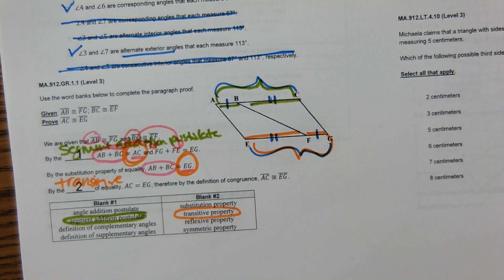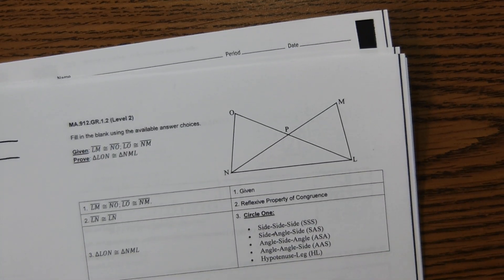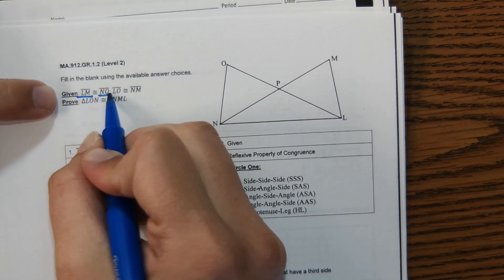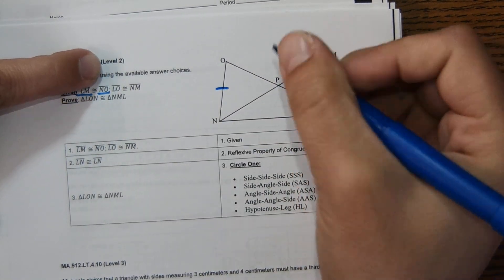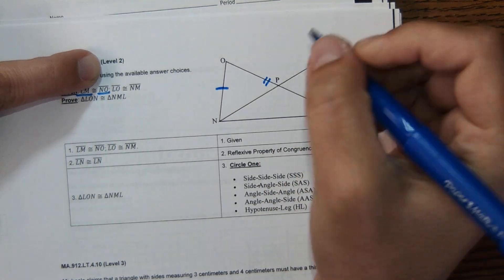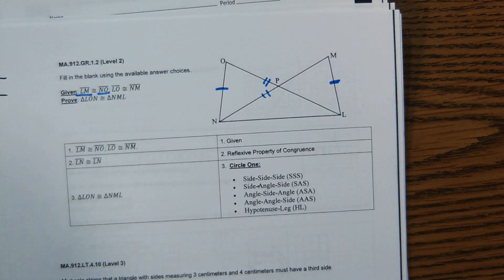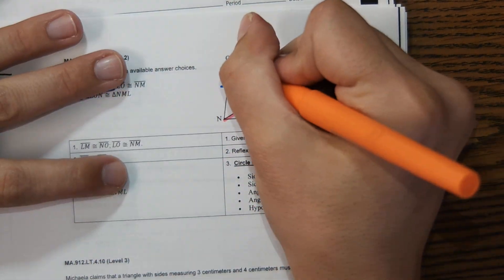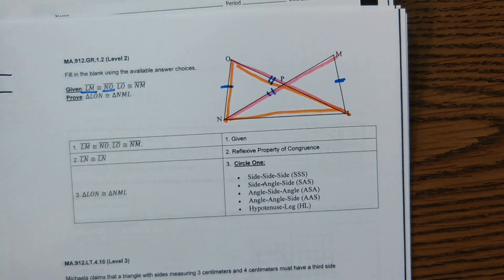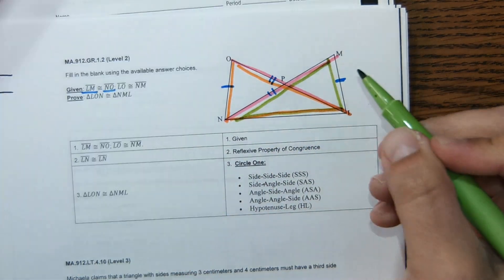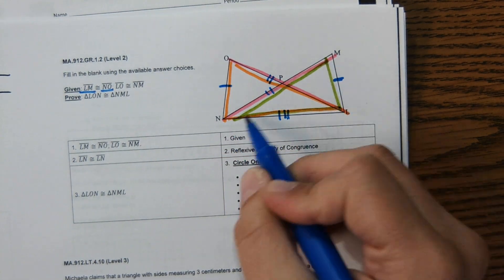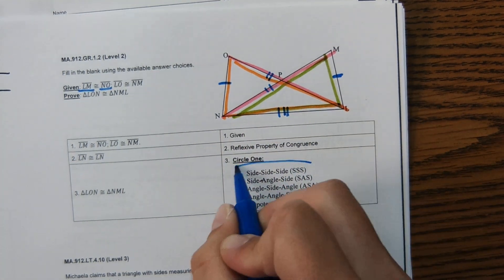That was the hardest of the proofs on here — it's a lot to look at. The next one says: given LM is congruent to NO, and LO is congruent to NM. We're looking at two triangles sharing a common side. To prove the triangles congruent, LN is congruent to itself by the Reflexive Property. With two sides given and the shared third side, we have Side-Side-Side congruence.